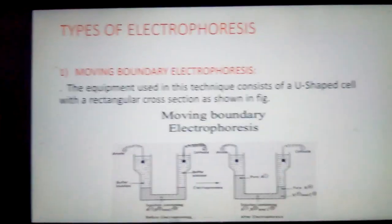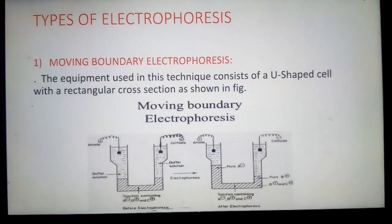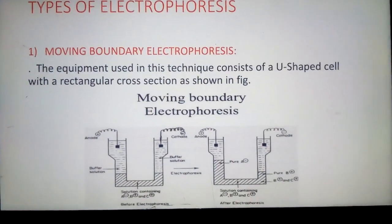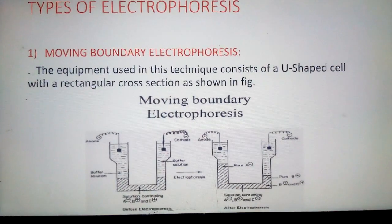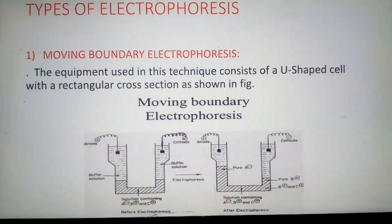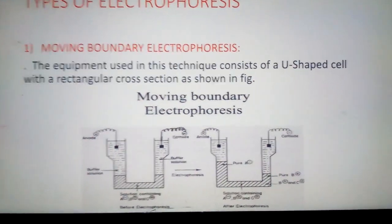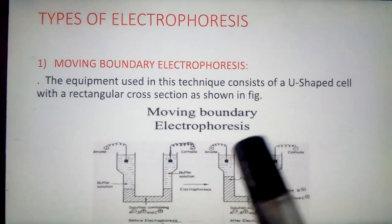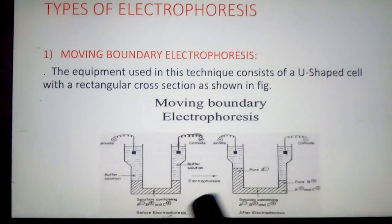Then the types of electrophoresis. The first type is moving boundary electrophoresis. This is the overall arrangement of moving boundary electrophoresis. The equipment used for this process consists of a U-shaped cell with a rectangular cross section.